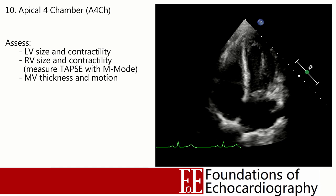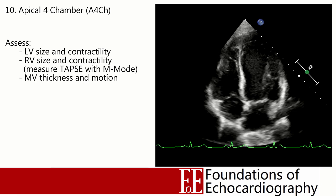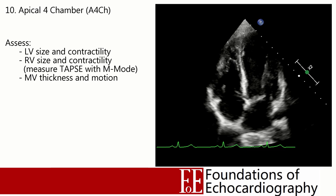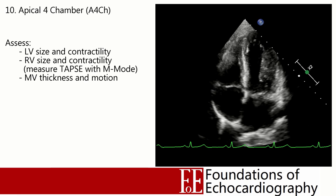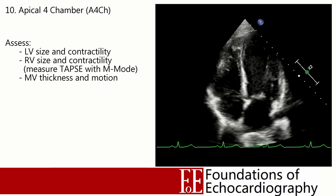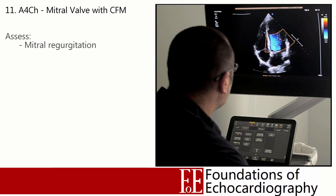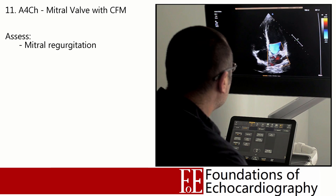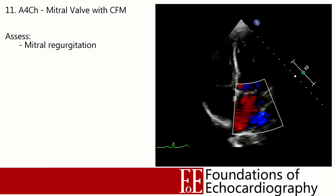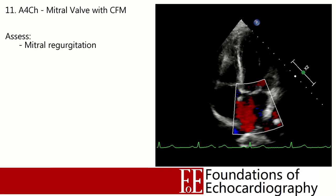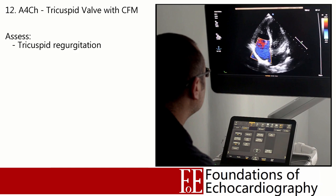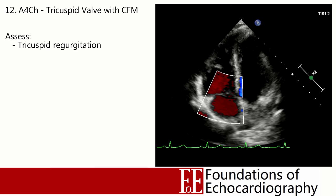In the apical four chamber view we assess LV size and contractility, RV size and contractility — specifically long axis function — and inspect the mitral valve leaflets for adequate opening and to ensure they don't prolapse or flail back into the left atrium during systole. Apply a colour box over the mitral valve leaflets and left atrium to look for regurgitant flow during systole, ensuring the box covers all leaflets when closed and all of the left atrium. Then move the colour box over to the tricuspid valve and right atrium to look for evidence of tricuspid regurgitation.